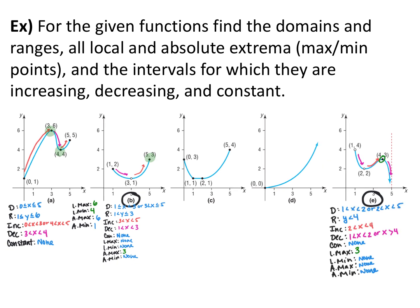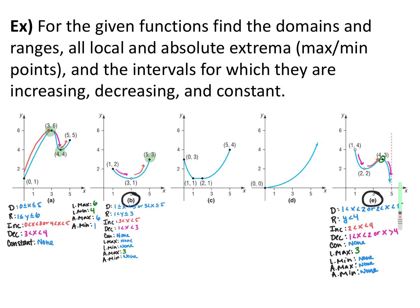Graph E has holes at (1, 4) and (2, 2), and a vertical asymptote at x = 5. There's an arrow showing the graph goes down toward negative infinity at the asymptote. For domain: 1 < x < 2 or 2 < x < 5, since the graph never goes to the right of that vertical asymptote line. All are strictly less than due to the holes and asymptote.